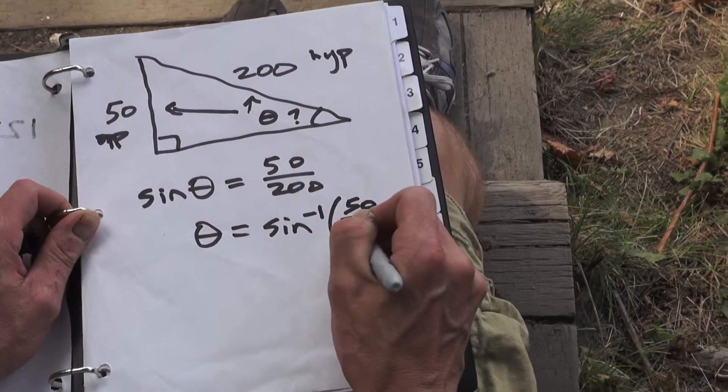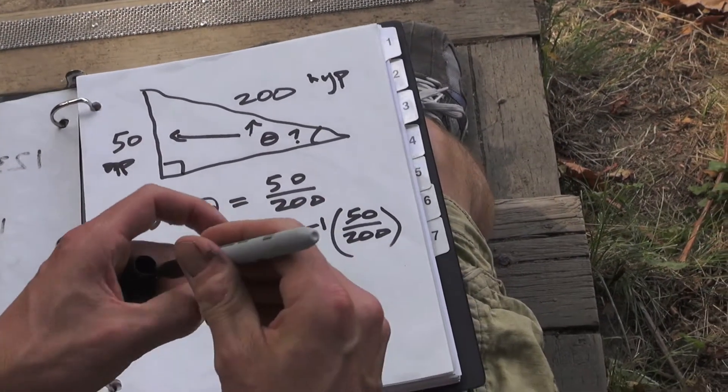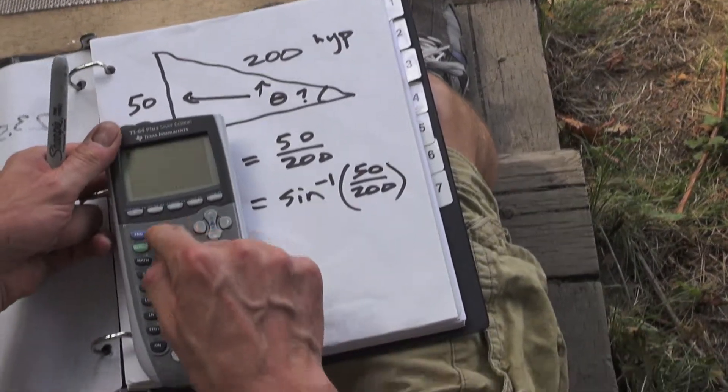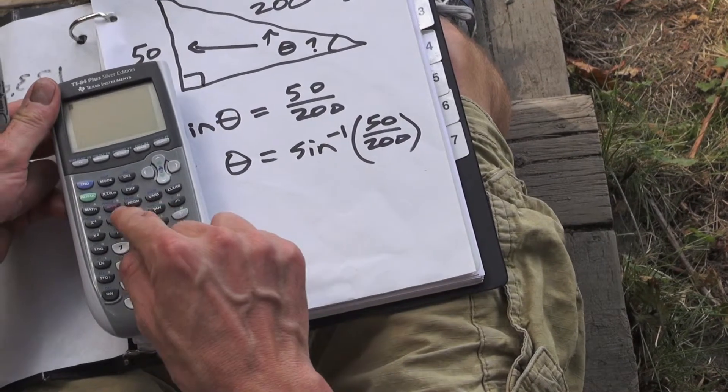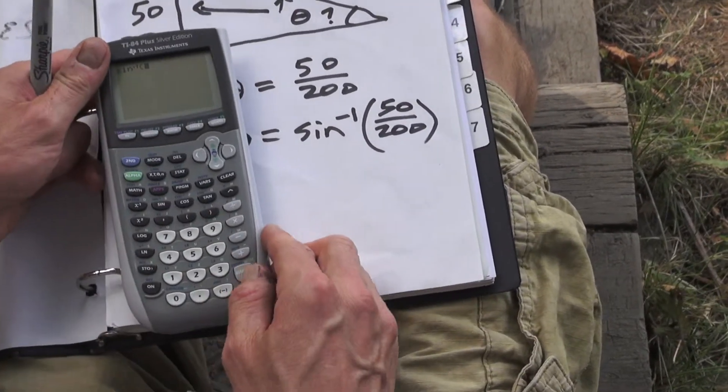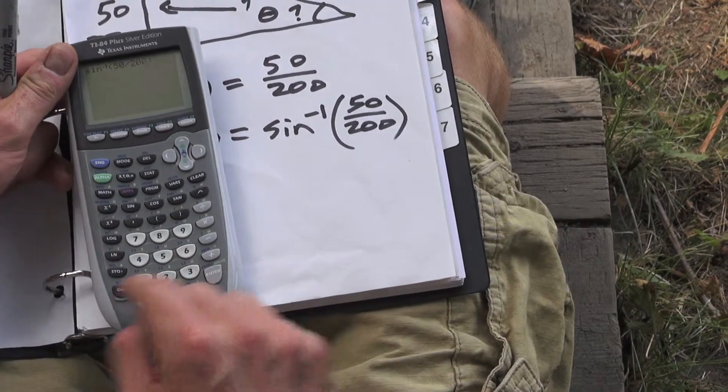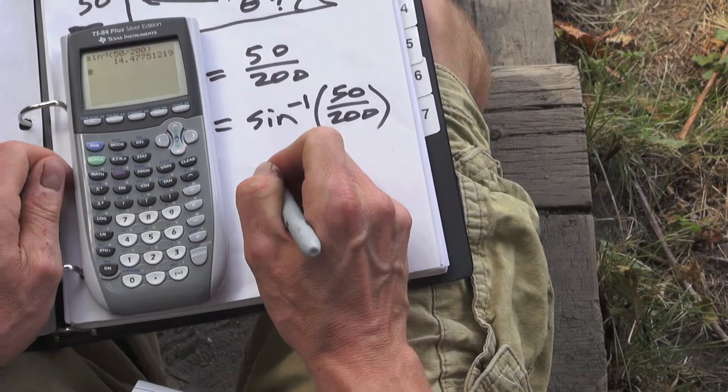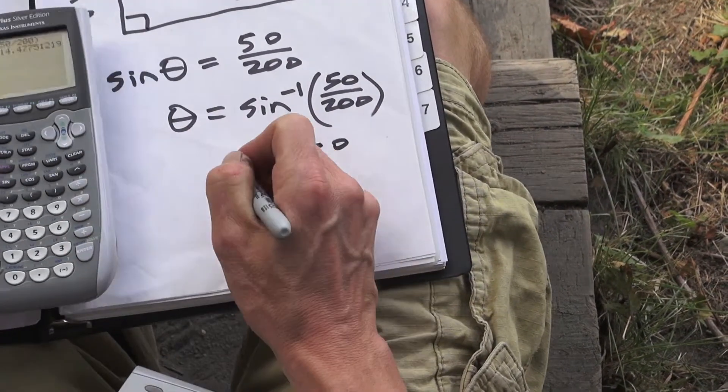Of whatever 50 over 200 is—I think we know what that is, but we'll do it on the calculator nonetheless. So make sure your calculator is in degree mode. We're going to punch that in right now: sine inverse of 50 divided by 200 gives us 14.5 degrees, roughly.